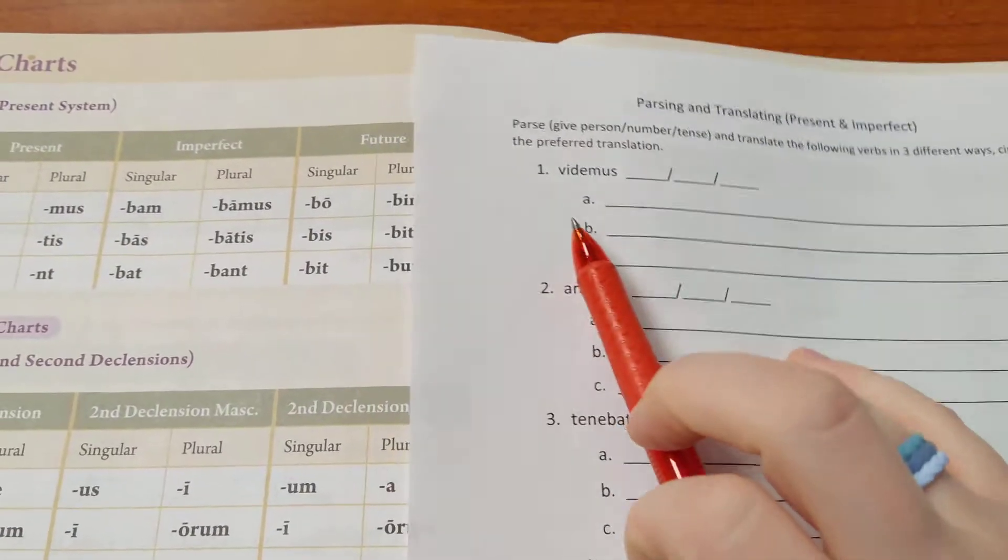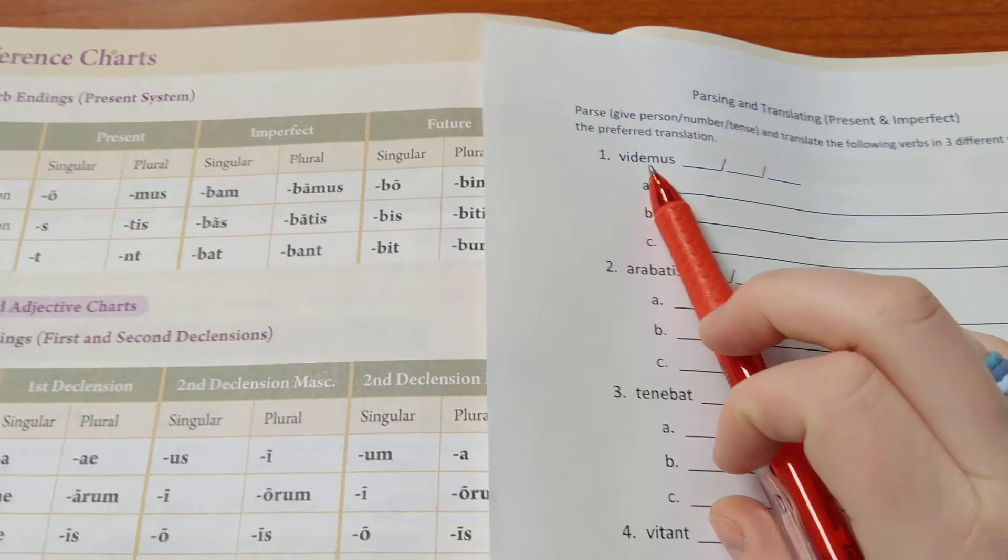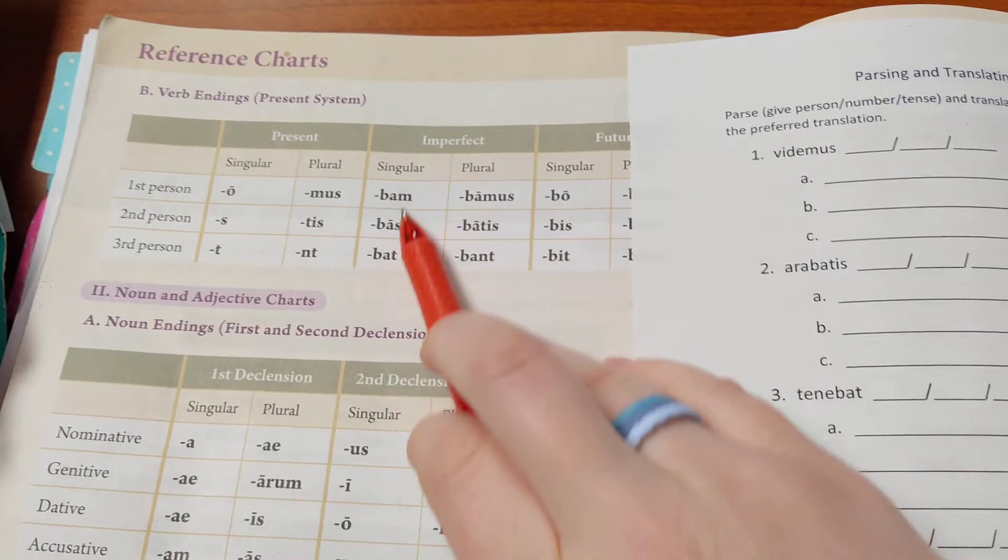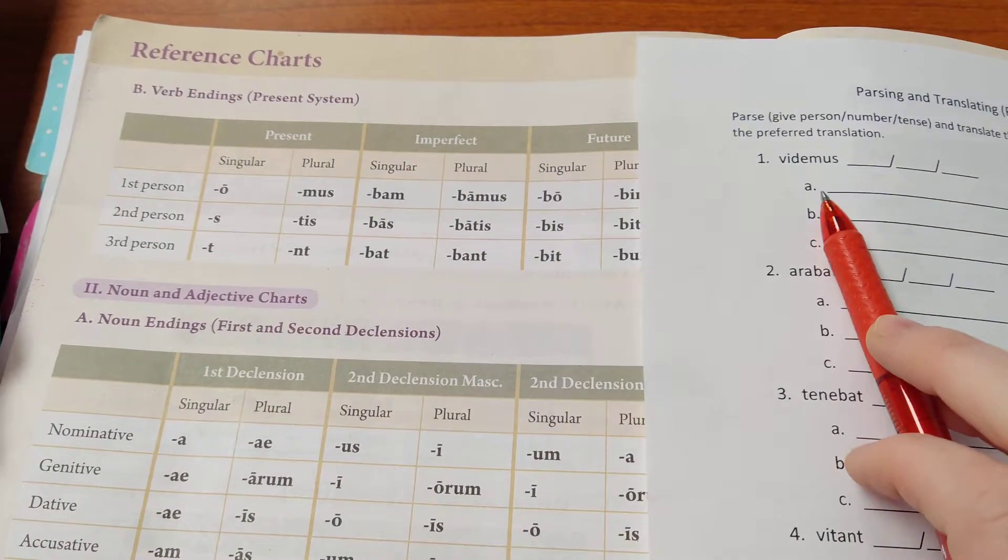When we parse a verb, the first thing we need to do is look at it and figure out what its ending is. It's going to be one of these 12 options because that's all we've learned so far. We've got -mus.